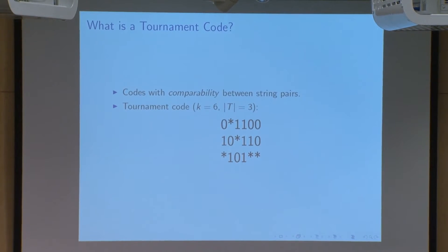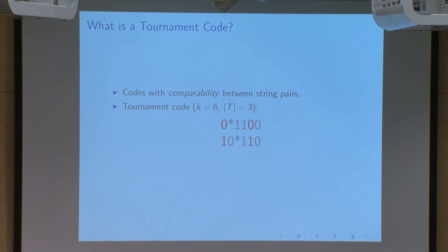Let's determine which of the first two strings is larger. To compare two strings in a tournament code, I look at every index where neither string has a star and the strings are not equal. If one of the strings is strictly larger than the other string in every such position, then I call that string larger. So in this case, since the second string has a one in positions one and five, while the first string has a zero in those positions, I call the second string greater than the first.